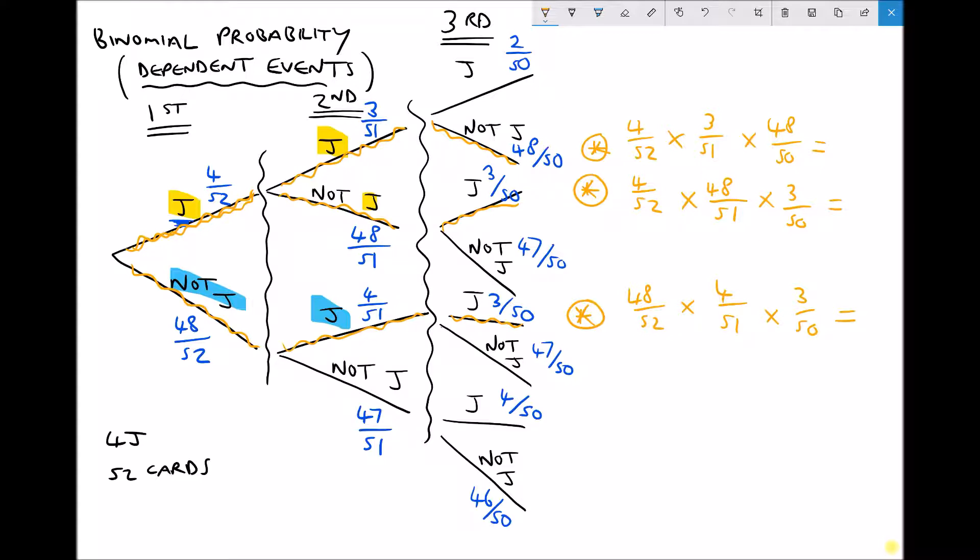Now let's multiply each of those through. First of all, 4 over 52 times 3 over 51 times 48 over 50 equals 0.00434. Second, we have 4 over 52 times 48 over 51 times 3 over 50, and we get 0.00434. And finally, 48 over 52 times 4 over 51 times 3 over 50 is also 0.00434, which equals 0.01303 to 5 decimal places.